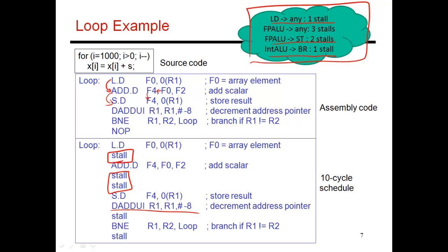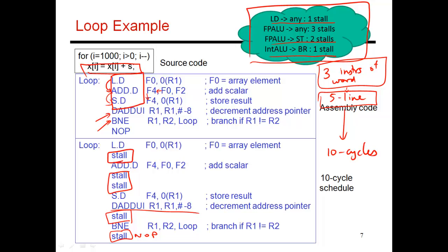Then an add feeding a branch, an integer add feeding a branch, is going to result in one stall cycle. And then I have a branch delay slot. So there's the no-op that I execute over here, which is like a stall. I'm really not doing anything useful. So ultimately, I had this five-line assembly code, which is trying to do three instructions worth of work. This is really the heart of the iteration. That's what I need to do to do x[i] = x[i] + s. So it's three instructions worth of work, which requires five assembly instructions, thanks to this decrement and this branch instruction. And these five assembly instructions go on to take 10 cycles. So it's not a very efficient schedule. And this is what we're going to improve in the next video.